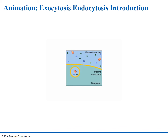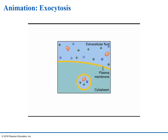Endocytosis is the movement of materials into a cell via membranous vesicles. Exocytosis is the movement of materials out of a cell via membranous vesicles. These processes allow patches of membrane to flow from compartment to compartment, reminding us that a cell is a dynamic structure. Exocytosis is the movement of intracellular vesicles to the plasma membrane, where they fuse with the membrane and release their contents into the surrounding fluid. This process occurs predominantly in secretory cells, such as mucus-producing cells or pancreatic cells that secrete enzymes into the digestive tract.